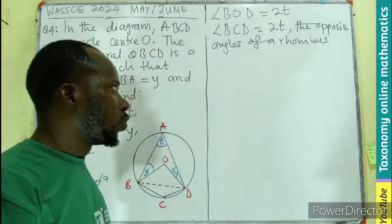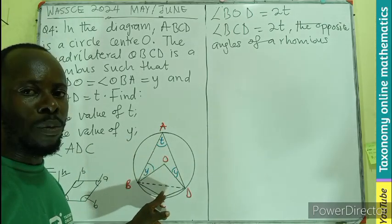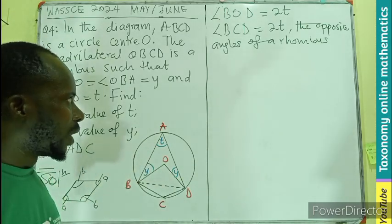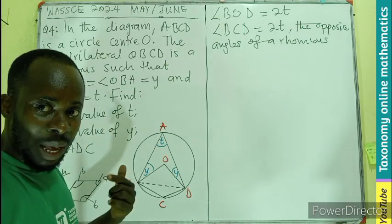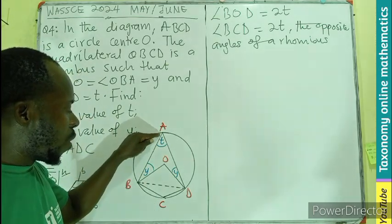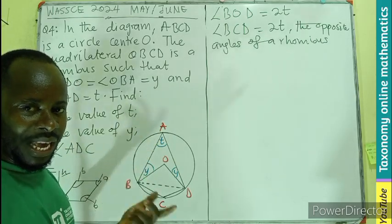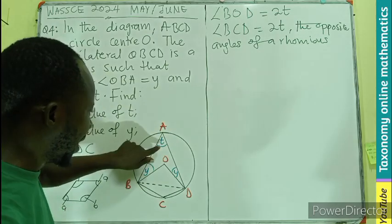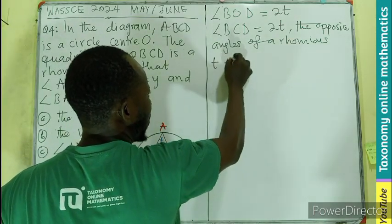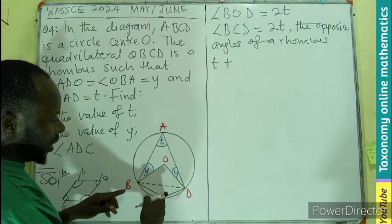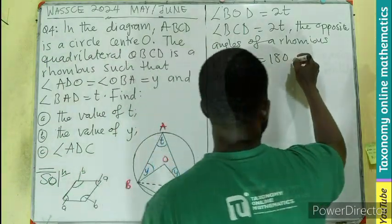Angle BCD equals 2t because the opposite angles of a rhombus are equal. Now coming back to the second property — the opposite angles of a cyclic quadrilateral sum to 180°. So we can say that angle t plus angle BCD, which is 2t, gives us 180°.